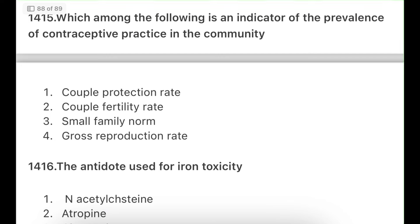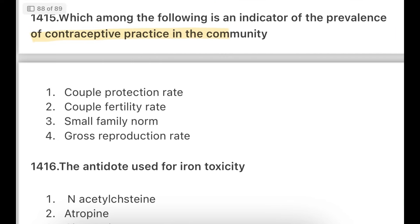Next: Which among the following is an indicator of prevalence of contraceptive practice in the community? Options: couple protection rate, couple fatality rate, small family norms, gross reproduction rate. The answer is Couple Protection Rate (CPR). This question has been repeated many times. According to CPR, contraceptive practices in the community are implemented to reduce unwanted pregnancies, STIs, and STDs.